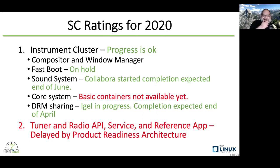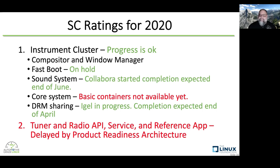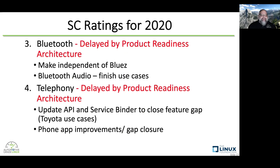Ranking from one to ten, the highest priority was instrument cluster. We made a lot of good progress in the instrument cluster last year, and even into this year — we let out some contracts for the sound system and for DRM sharing that are nearly completed. The sound system should be completed by the end of June. We had a tuner radio APIs and service binder and reference application — that was delayed by the product readiness architecture, the IVI expert group, and some decisions they needed to make. Bluetooth was again delayed by product readiness as well as some telephony work. In both cases, we did some updated use cases — we got use cases from Toyota for feature analysis and gap analysis.